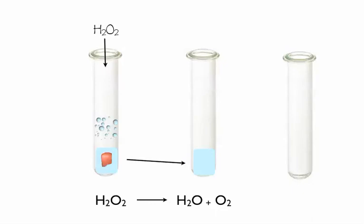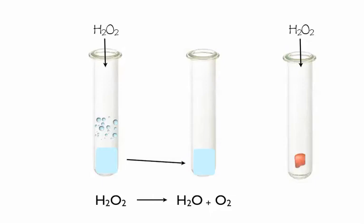To test what the mystery liquid was, you dunked a fresh piece of liver in it — and nothing happened, because the liquid turned out to be just water. Look at the formula: water and oxygen. Now, we didn't run this experiment, but if you took that same liver, put it in a new test tube, and added hydrogen peroxide again — you'd get bubbles and more water. That's because the catalase doesn't get deformed; it can work over and over again.